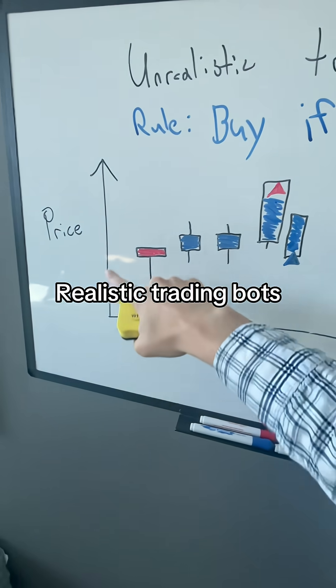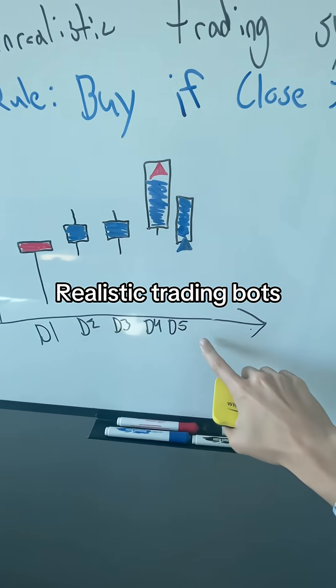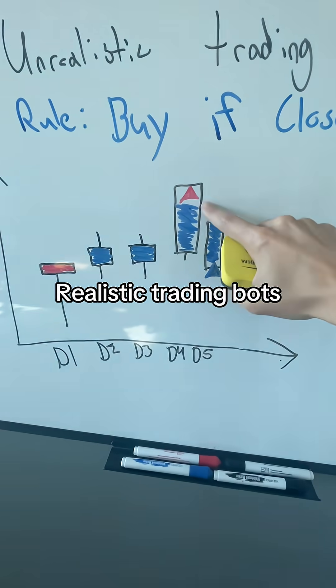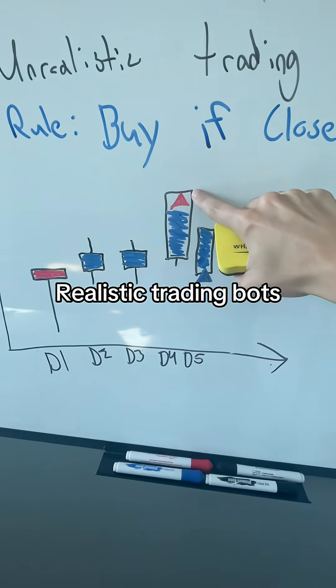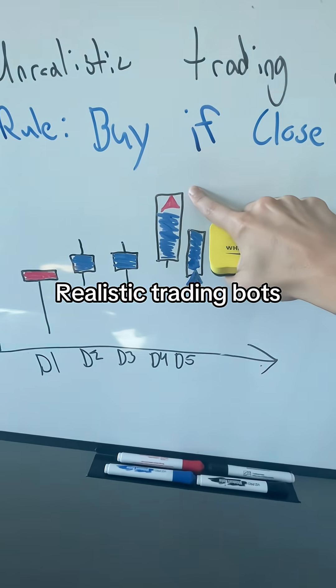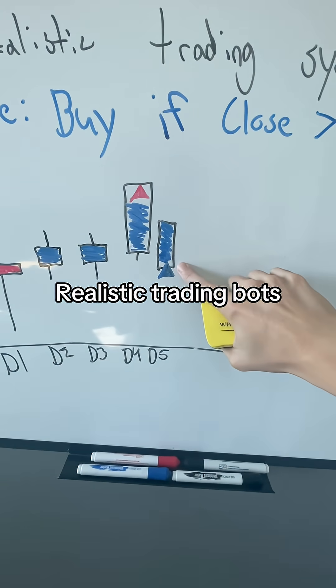We have a simple chart here — price, day 1, day 2, all the way up to day 5. On day 4, the close closes up here and then opens down here.